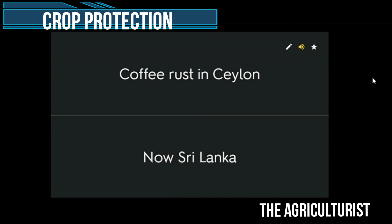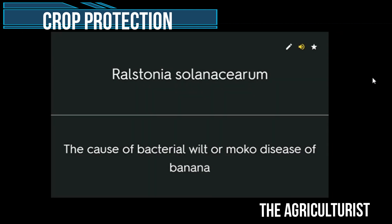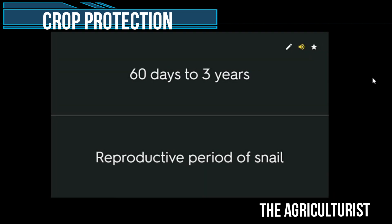Coffee rust in Ceylon, now Sri Lanka. Ralstonia solanacearum — the cause of bacterial wilt or moco disease of banana. 60 days to 3 years — reproductive period of snails.